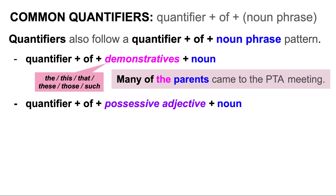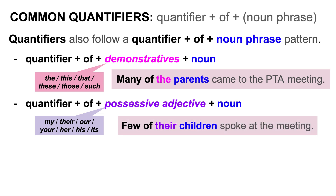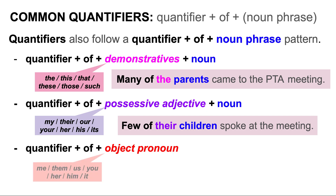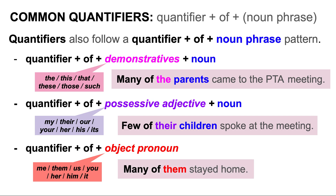We can also use a quantifier plus of plus possessive adjective plus noun. Possessive adjectives are words such as my, their, our, your, her, his, its. For example: Few of their children spoke at the PTA meeting. Lastly, you can also use a quantifier plus of plus object pronoun. Object pronouns are words such as me, them, us, you, her, him, it. Sample sentence: Many of them stayed home.